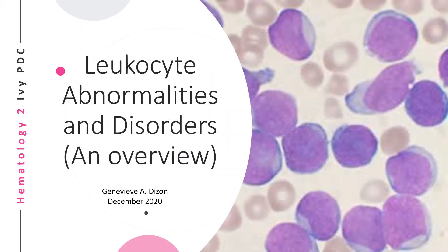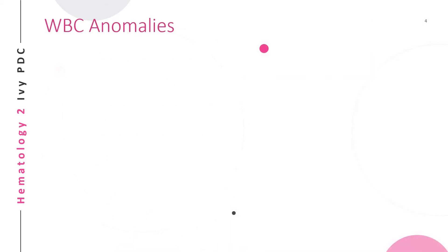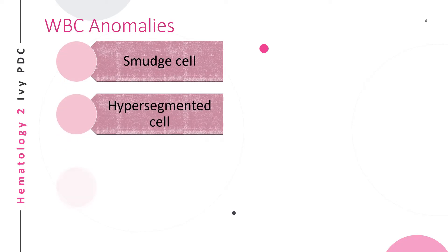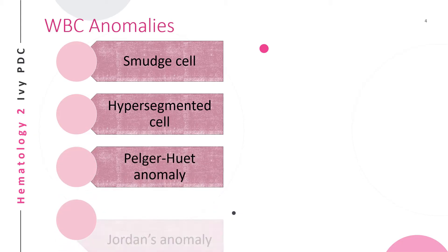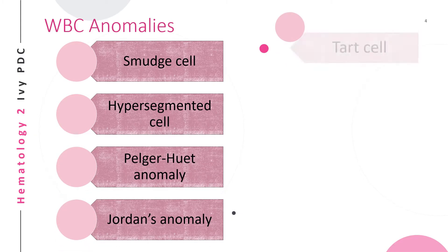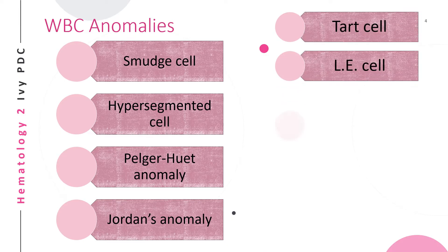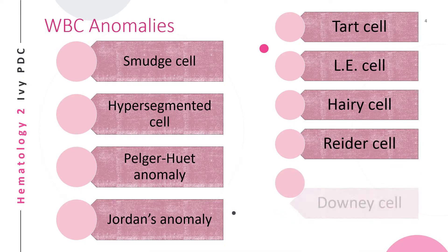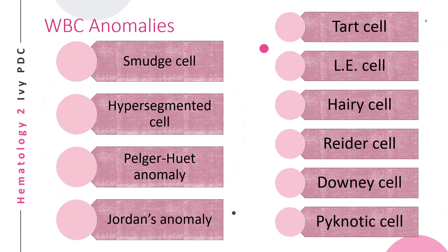This video serves as an overview for the different leukocyte or white blood cell abnormalities that may be seen and the disorders they are related to. The different leukocyte anomalies are: smudge cell, hypersegmented cell, Pelger-Huët anomaly, Jordan's anomaly, Tart cell, LE cell, hairy cell, radar cell, Downy cell, and the pyknotic cell. All of these will be discussed briefly.